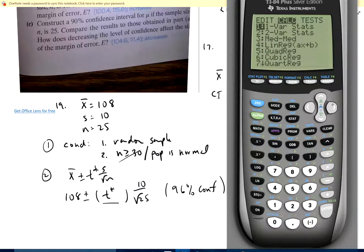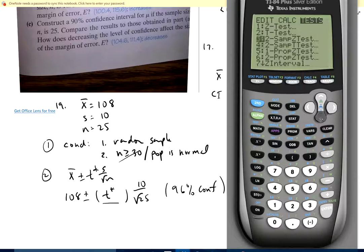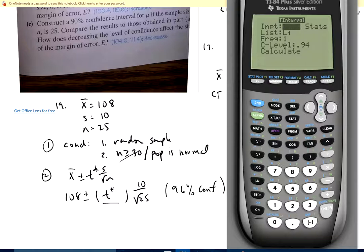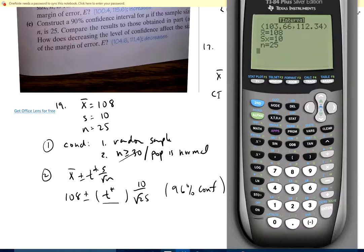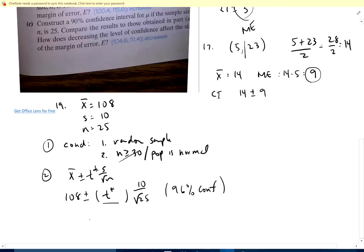We've got stat, tests. What kind of interval am I doing? It's a T interval. I'm going to go down to T interval and I have to go over to stat because I'm putting stats in. X bar is 108, standard deviation is 10, sample size is 25, confidence level is 96. So it'll take that into account and find T for me. I end up with my confidence interval of 103.6 and 112.3.